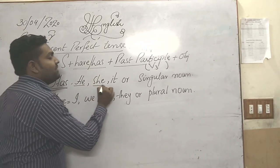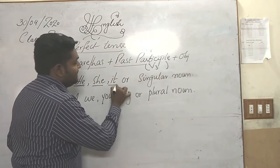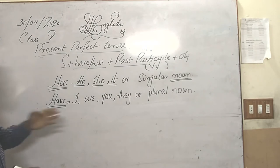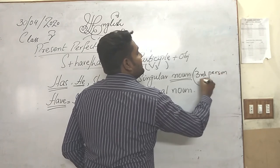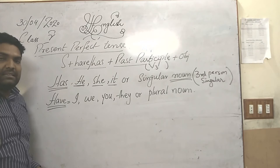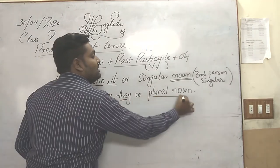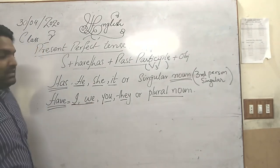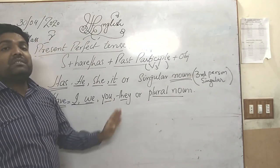If the subject of the sentence is 'he', 'she', 'it', or any singular noun — place, person, thing, whatever — it means that is third person singular. With third person singular we use 'has'. We use 'have' with 'I', 'we', 'you', and 'they', or more than one noun in a plural form. 'I' and 'we' are first person, 'you' is second person, and 'they' or a plural noun is third person plural.